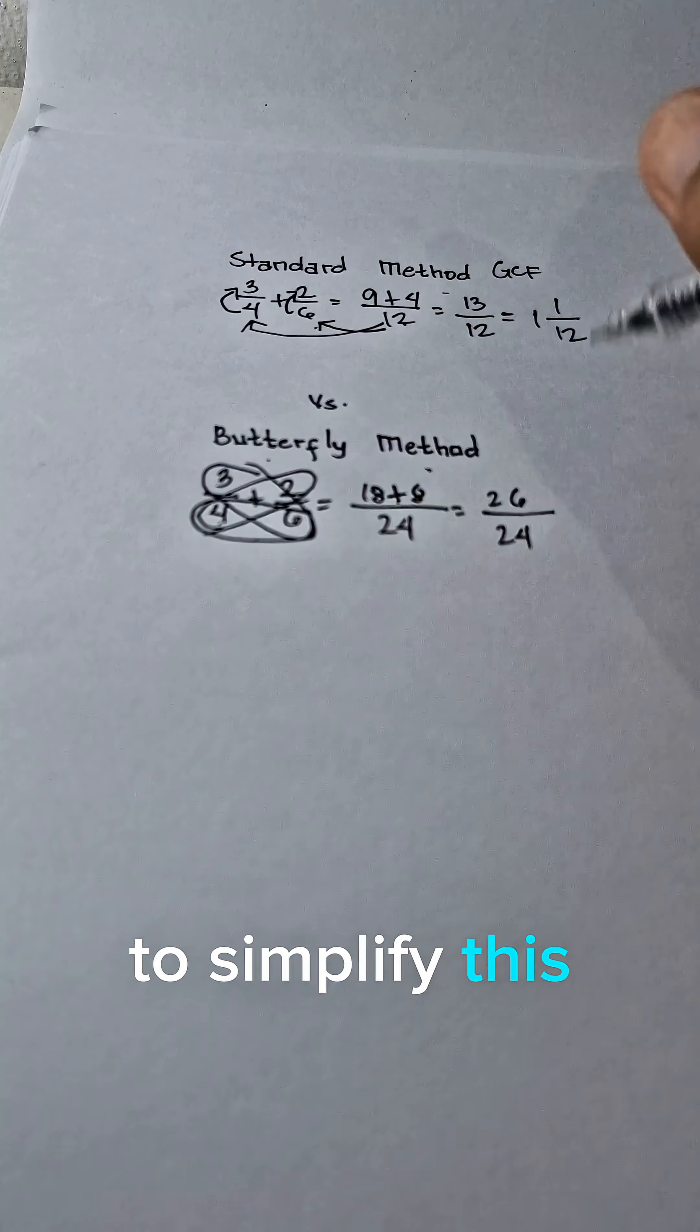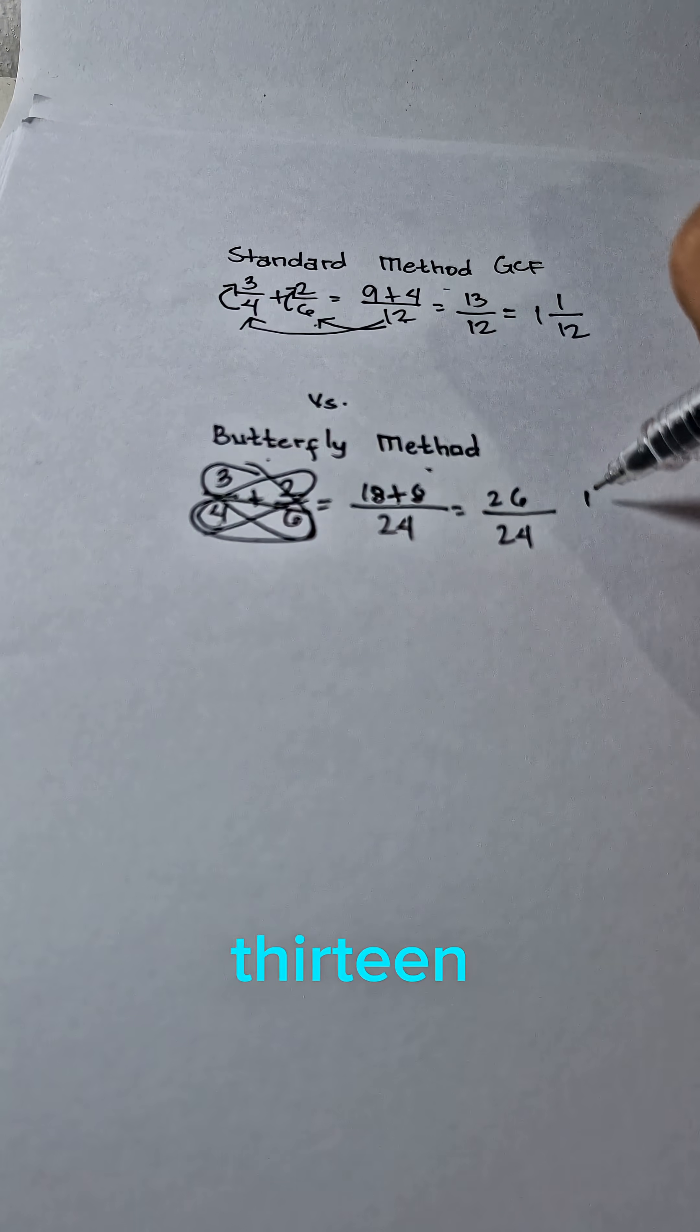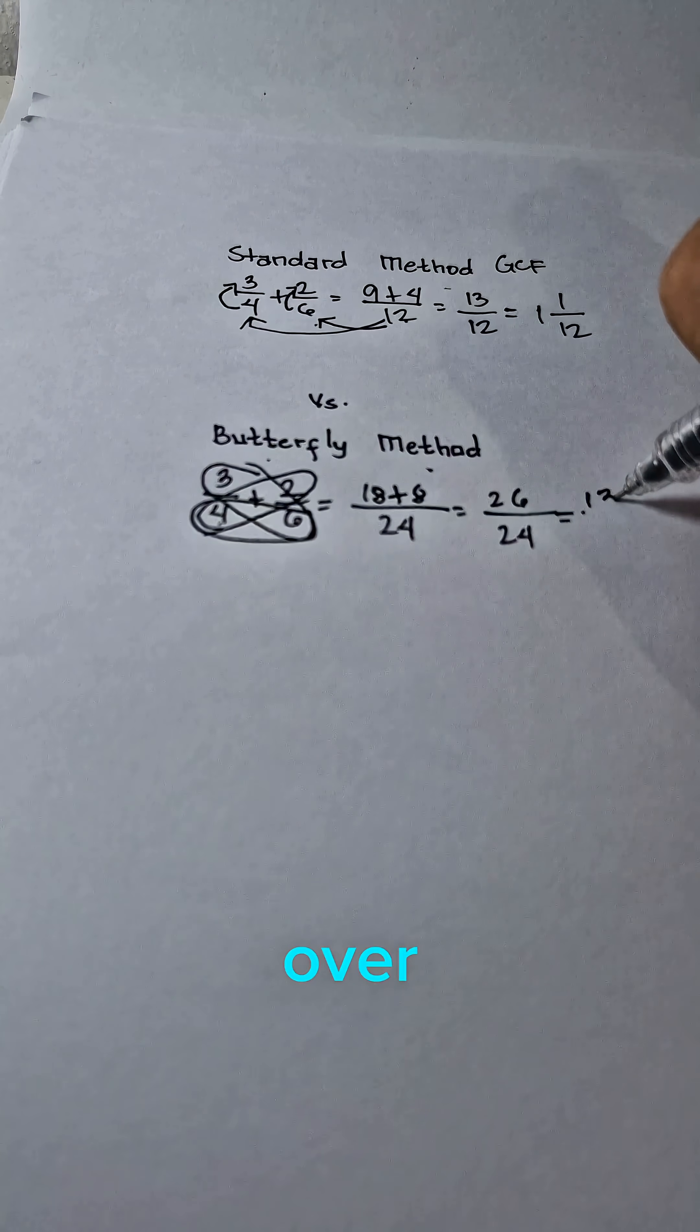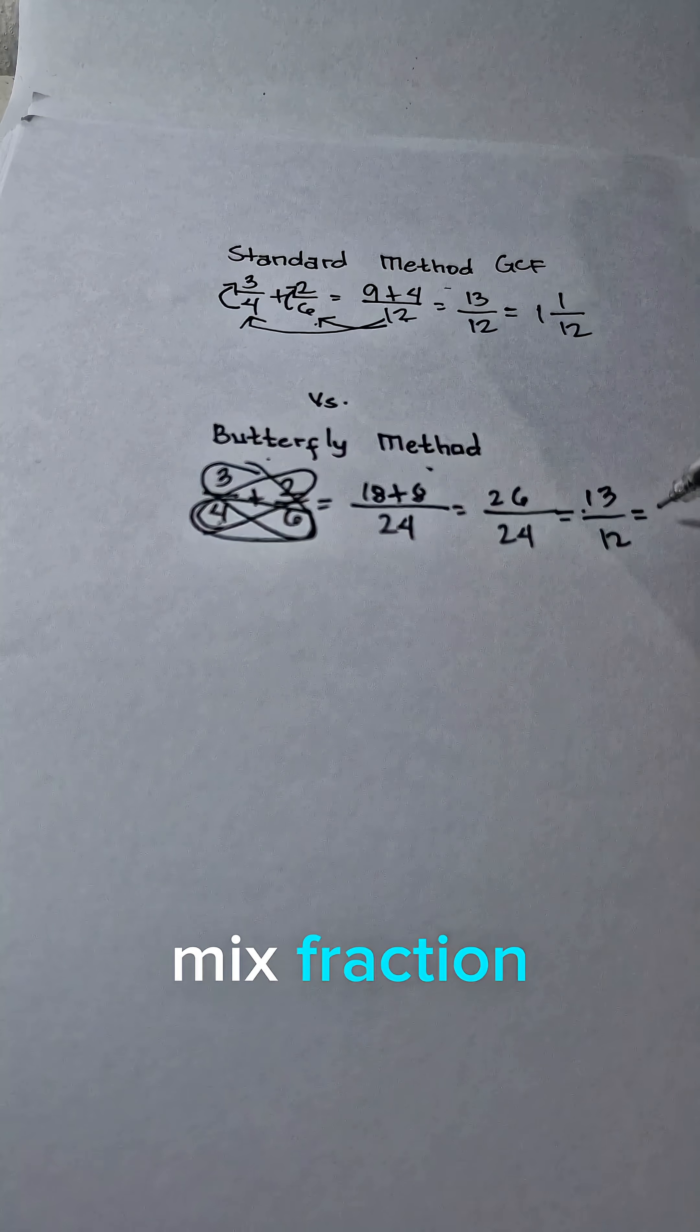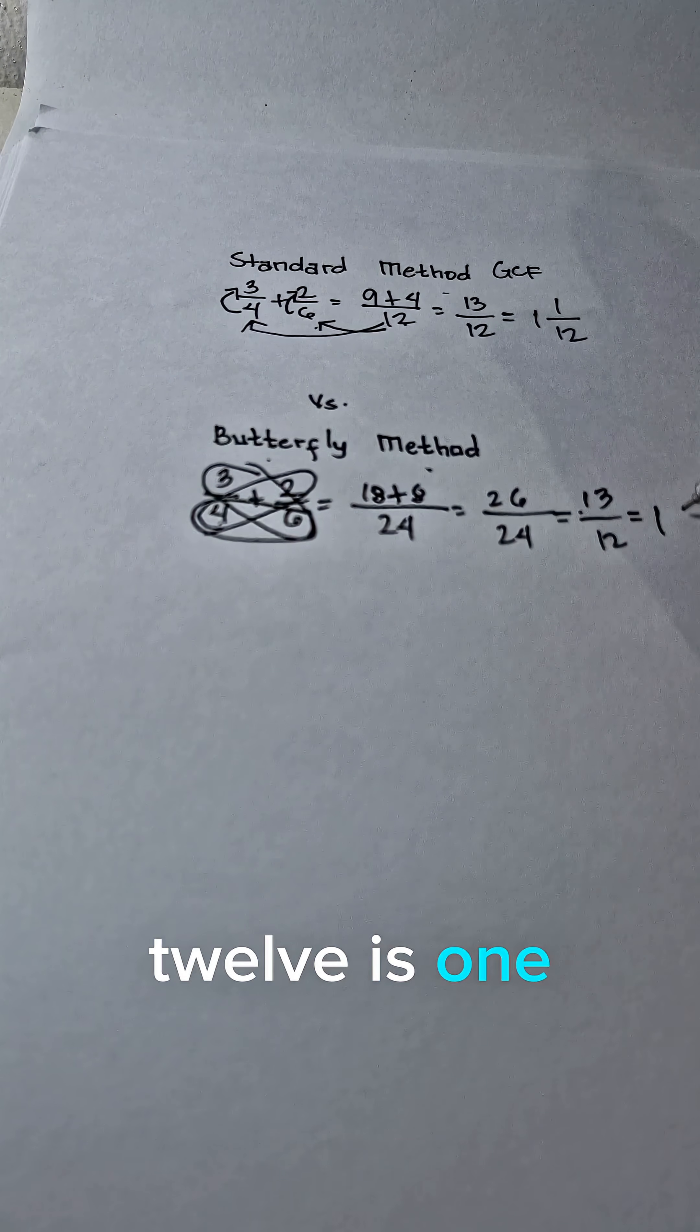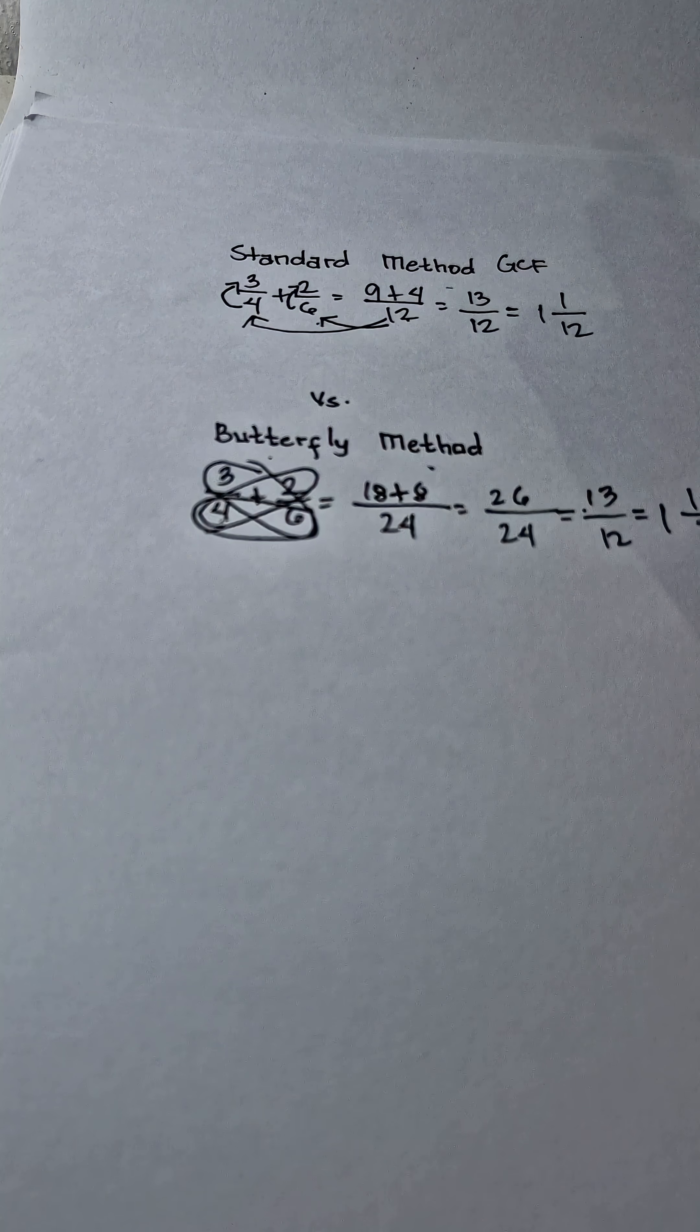If I'm going to simplify this, this is 13 over 12. And then next, turn it into mixed fraction. 13 divided by 12 is 1. And the remainder is 1. Copy the denominator.